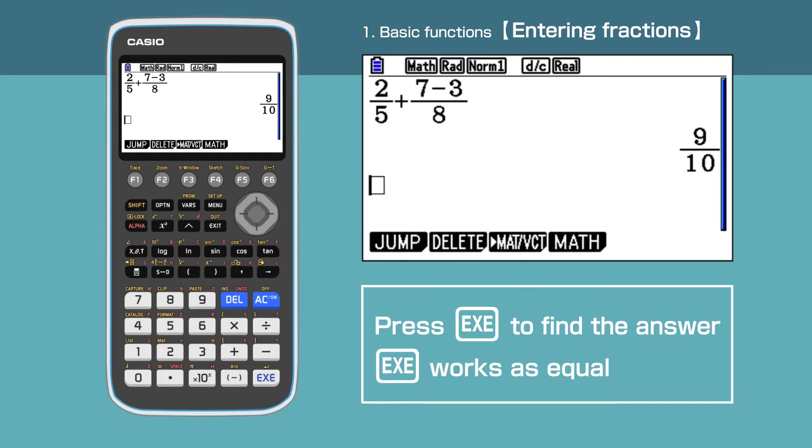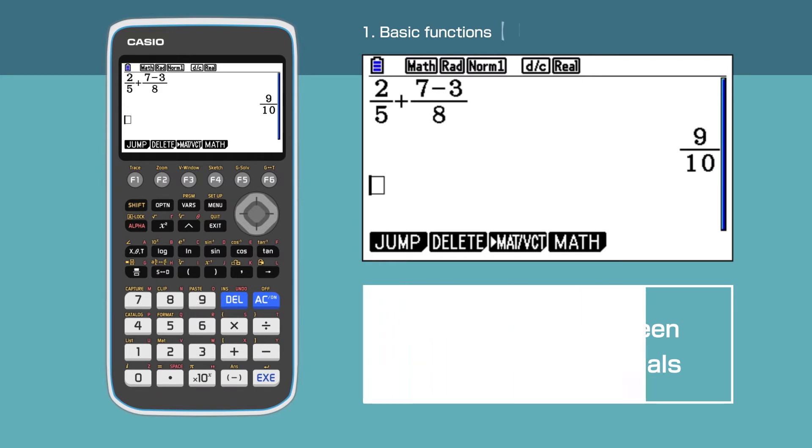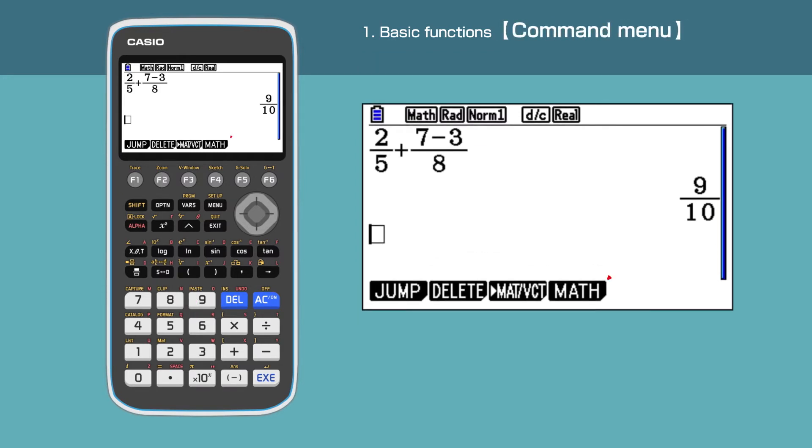If you want the answer in decimal form, press the SD button. Now the answer is given in decimal. Press the SD button again to convert the answer back to fraction form.